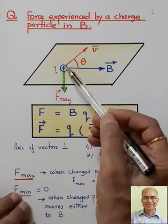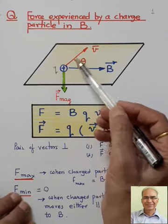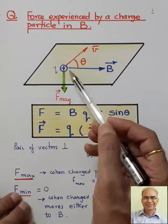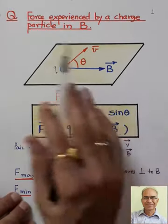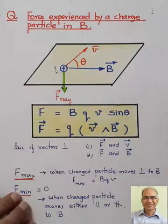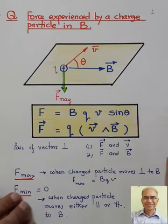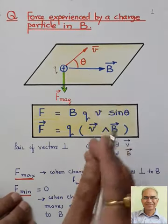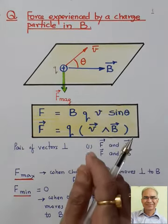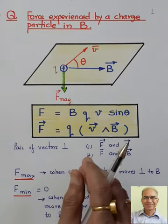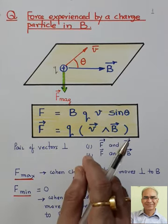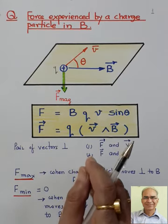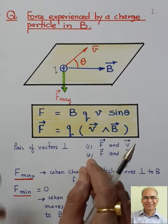In this diagram you can see that vector V and B are lying in the horizontal plane, and the force is acting perpendicular to them. Why the force should be downwards or upwards, we will see after a minute.